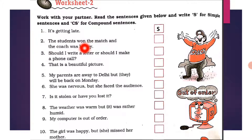'The students won the match and the coach was happy' — two subjects, two predicates joined by the conjunction 'and', a coordinating conjunction. So this is a compound sentence — CS. 'Should I write a letter or should I make a phone call?' — also a compound sentence. 'That is a beautiful picture' — one subject, one predicate — simple sentence.